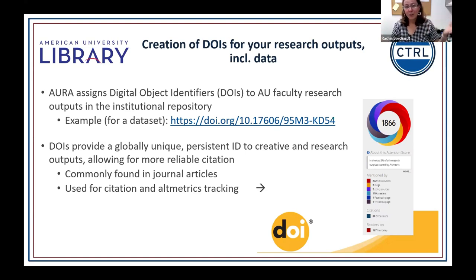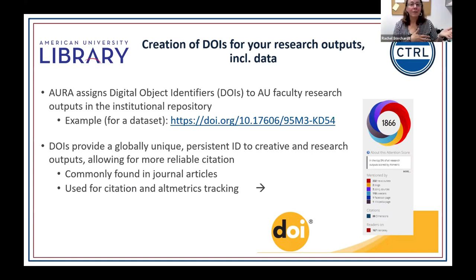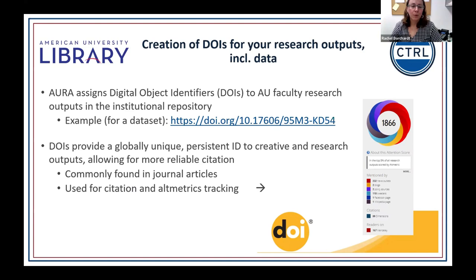We are moving institutional repository materials from our legacy archive, AUDRA, into the new one, AURA. Most of those materials have DOIs, and we will be going through and updating what the resolution URL is — where clicking a DOI actually takes you. That is our responsibility: to make sure DOIs are stable over time. We can also use DOIs to track research. In order to track how your research is being used, we need a common way, and DOIs have been the most reliable way to track research outputs over time.